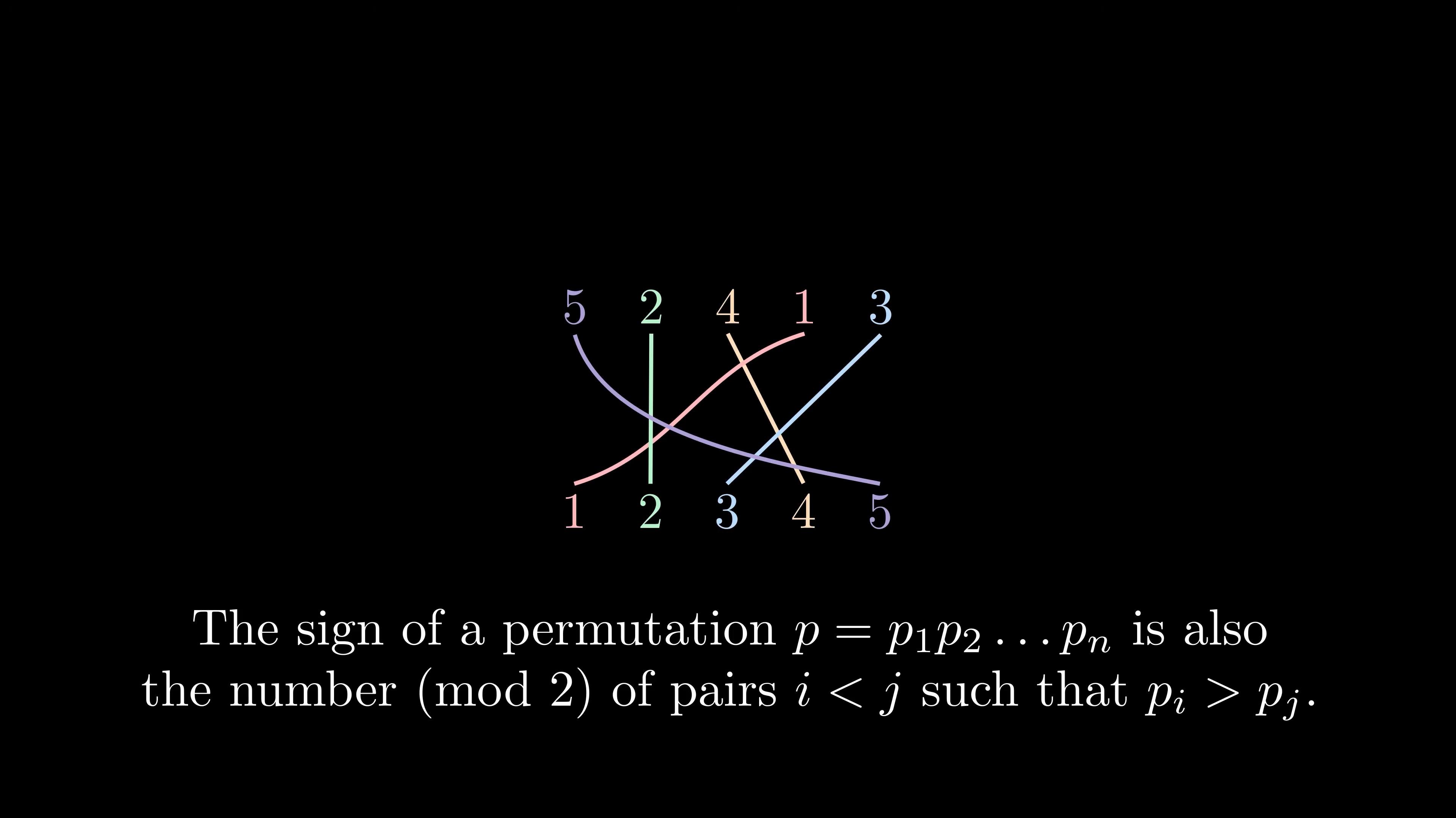This gives us yet another way to define the sign of a permutation. It is the number of pairs in your permutation, where the left number is bigger than the right number.